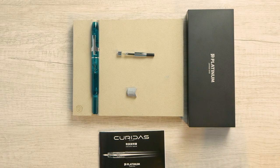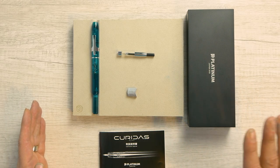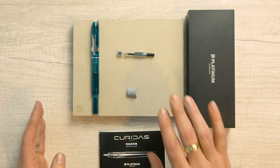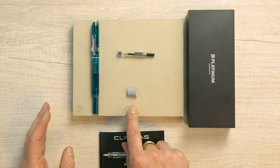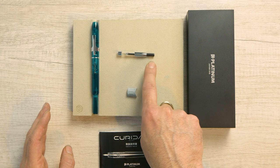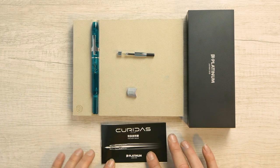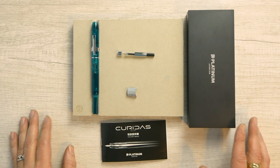Okay, so let's take a look at the Cura-DOS and take it apart. Here's what you get. You get the nice Platinum box, I've got a gray tool here, we'll talk about that in a minute. We've got a converter, the pen, the instruction book, and of course it comes with a cartridge.